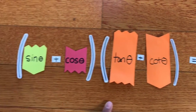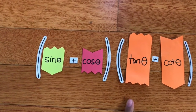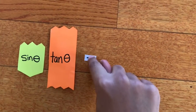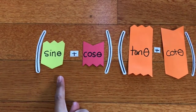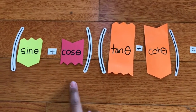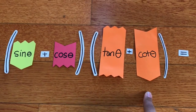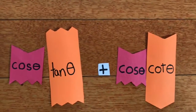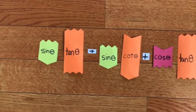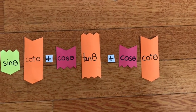After we distribute using the FOIL method, we get: the first, sine theta times tangent theta; plus the outer, sine theta times cotangent theta; plus the inner, cosine theta times tangent theta; plus the last, cosine theta times cotangent theta. So now we have sine theta times tangent theta, plus sine theta times cotangent theta, plus cosine theta times tangent theta, plus cosine theta times cotangent theta.